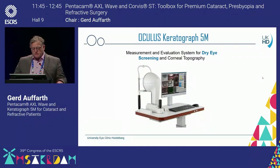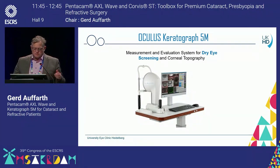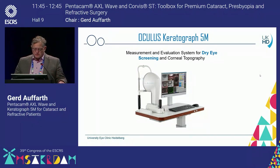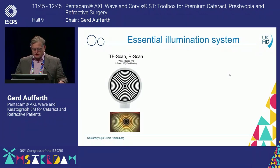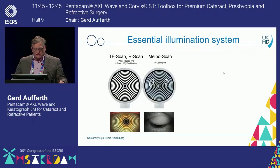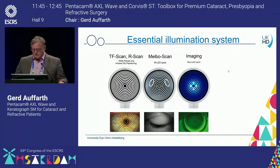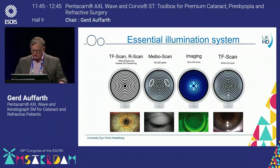Then I would like to focus on the Keratograph 5M. I really like this very much to give an objective means of quantifying the surface situation and the tear film situation. You have several different modes: you can measure the TFR scan, the MIBO scan, imaging with the blue light of fluorescence on the eye, and the TF scan.